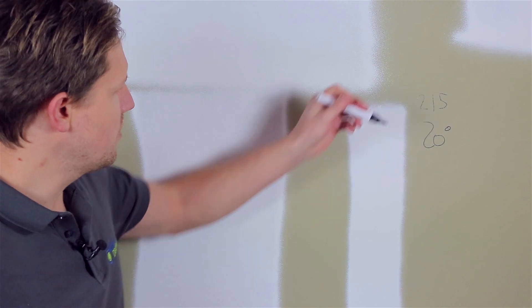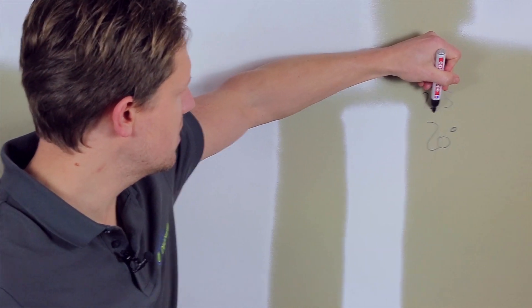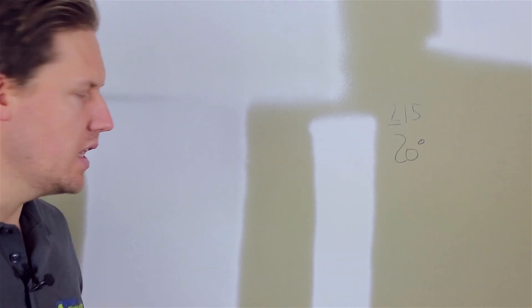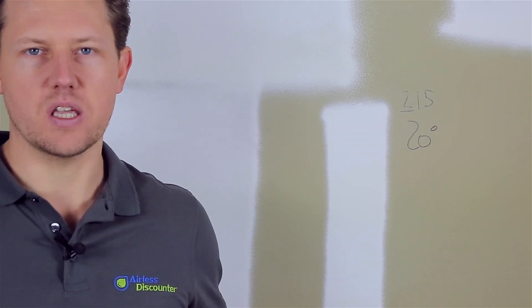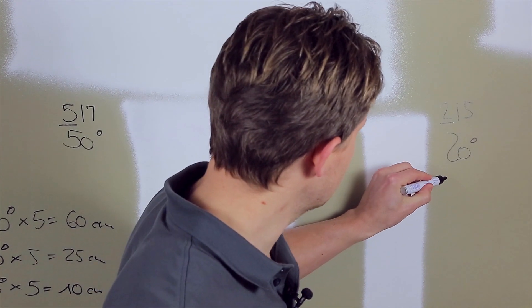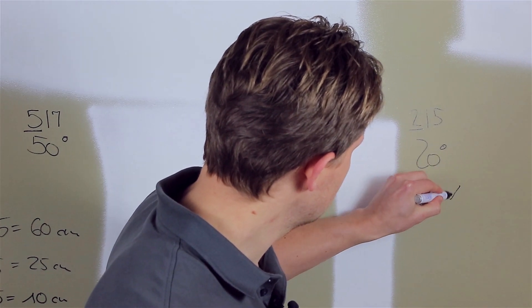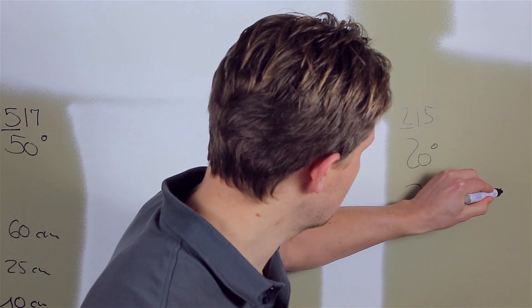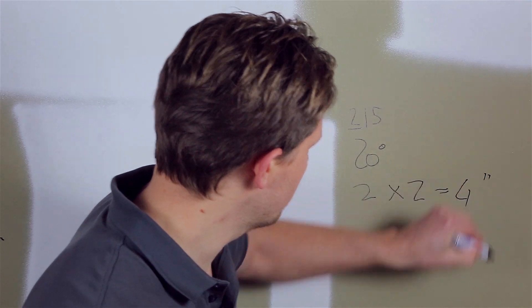You would simply take the first number—in this case we have 2—and for those of you working in inches, you would times that number by 2. So in this case, we would take the 2, times it by 2, and you would get 4 inches.